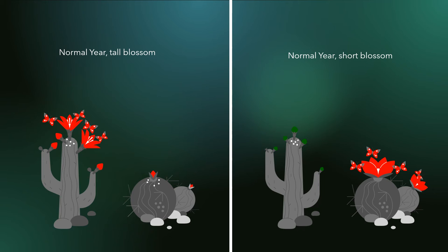You now have two distinct populations of insects. Neither emergence of insects from their eggs will overlap: at the time the first group hatches, the short cactus has not yet blossomed; and at the time the second batch hatches, the tall cactus has finished its blossom and the first batch has already mated and laid its eggs for next year.